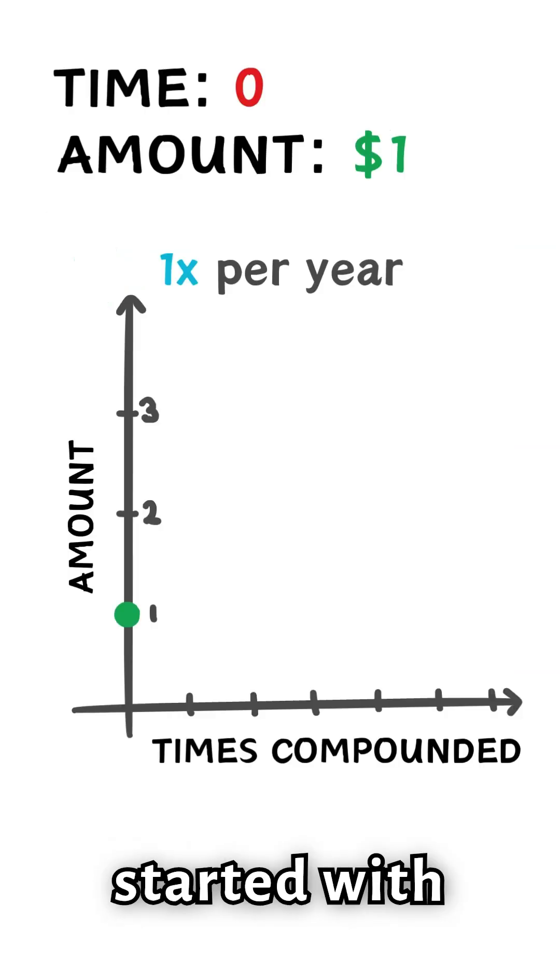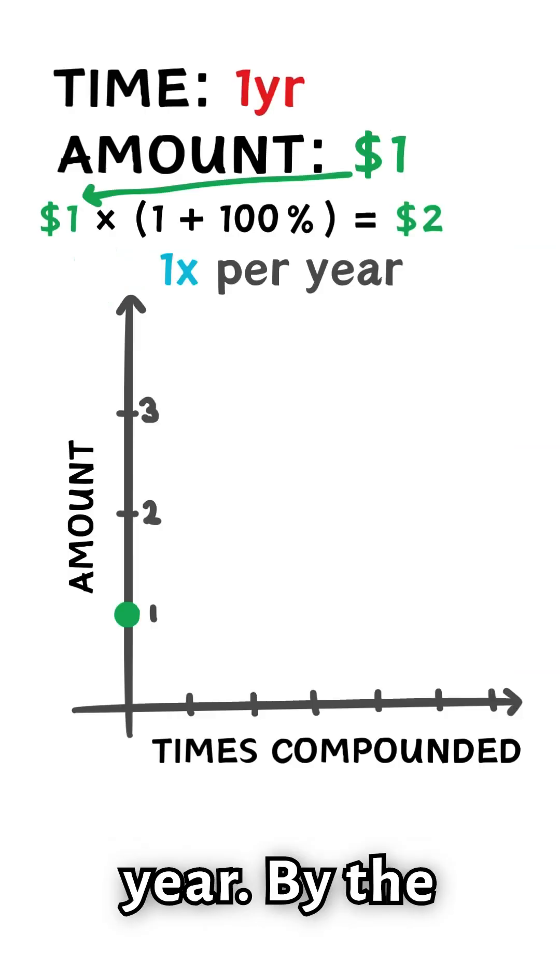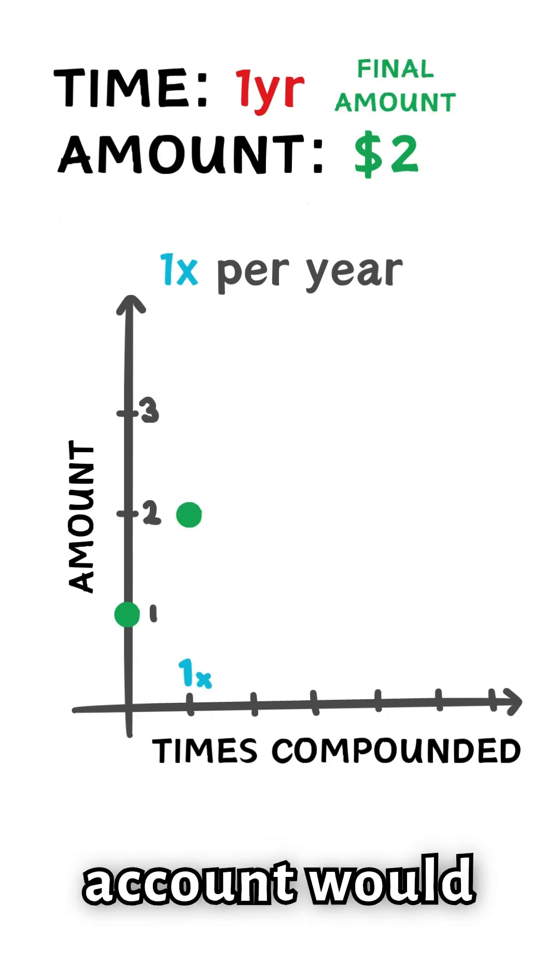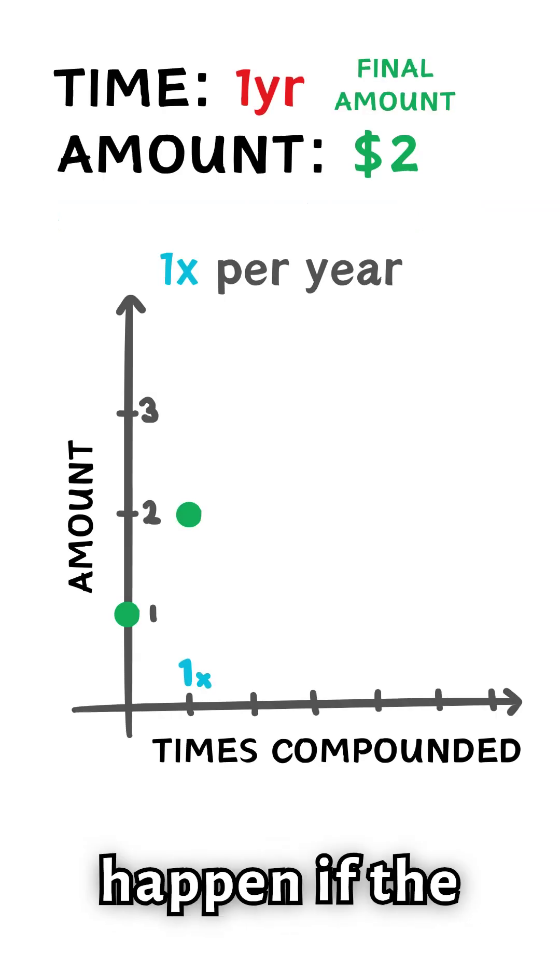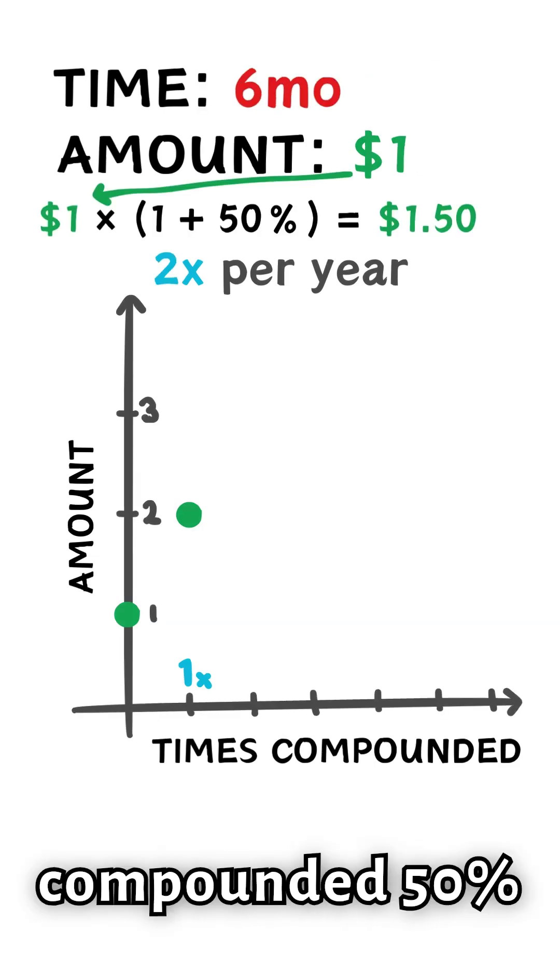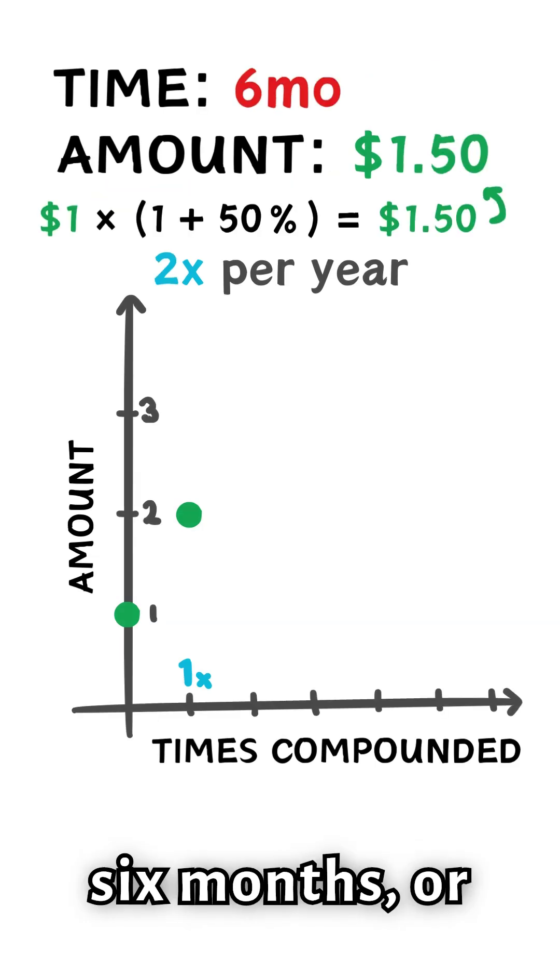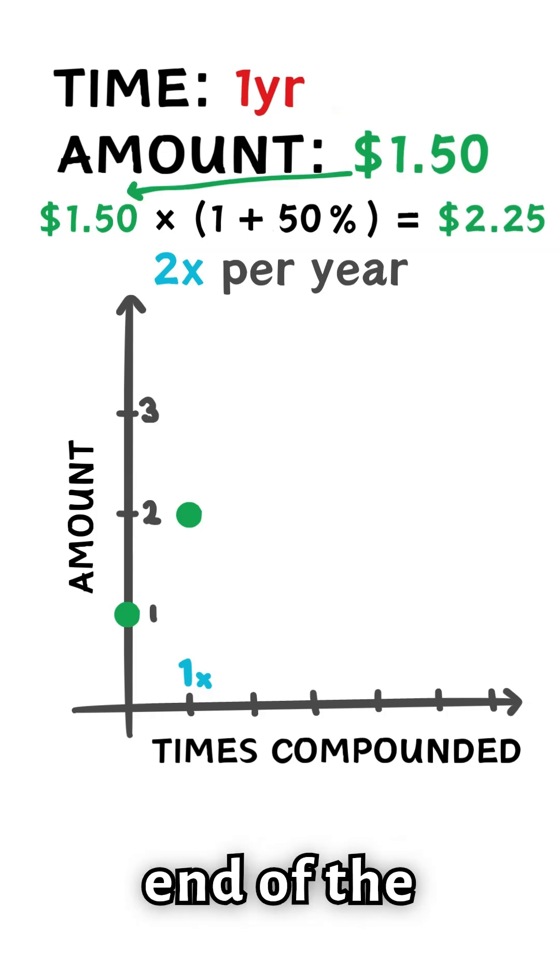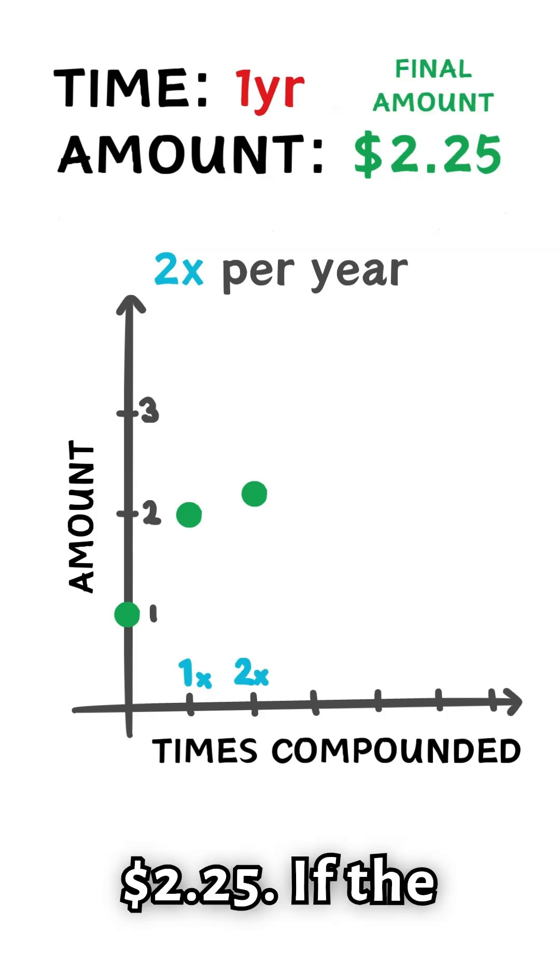If a bank account started with $1 and compounded 100% every year, by the end of one year, the account would have $2. But what would happen if the bank compounded the money more frequently? If the bank compounded 50% interest every 6 months, or half of a year, then the amount by the end of the year would be $2.25.